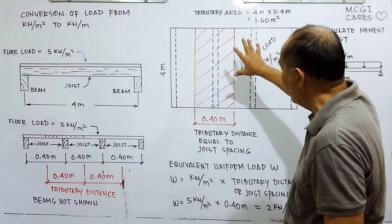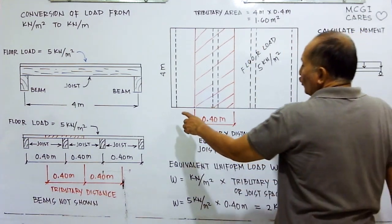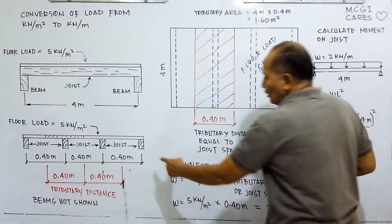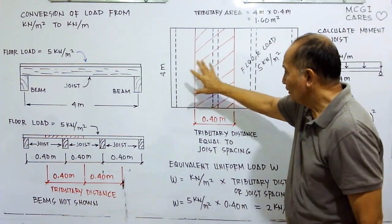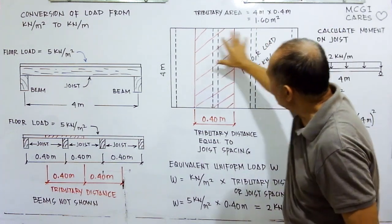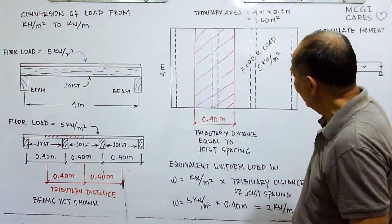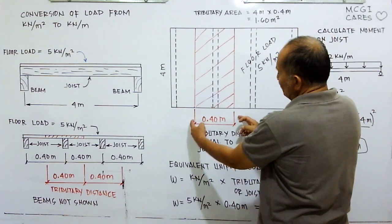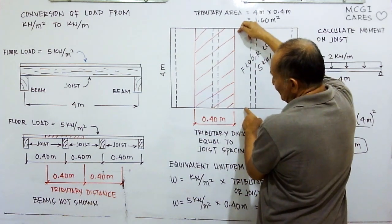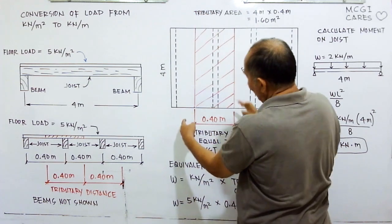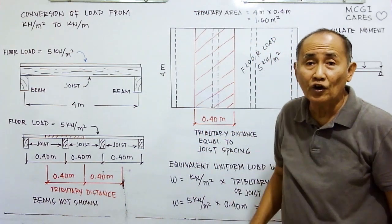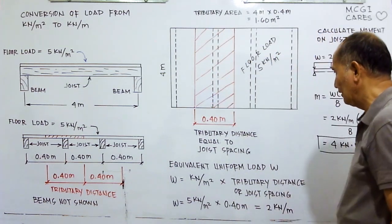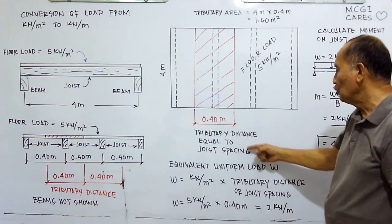Looking at the floor plan, we can see the joists. On top we have a floor load of five kilonewton per square meter throughout the flooring. The tributary area is marked: the tributary length is four meters and the tributary distance is 0.4 meter, which equals the joist spacing. Tributary distance equals joist spacing.